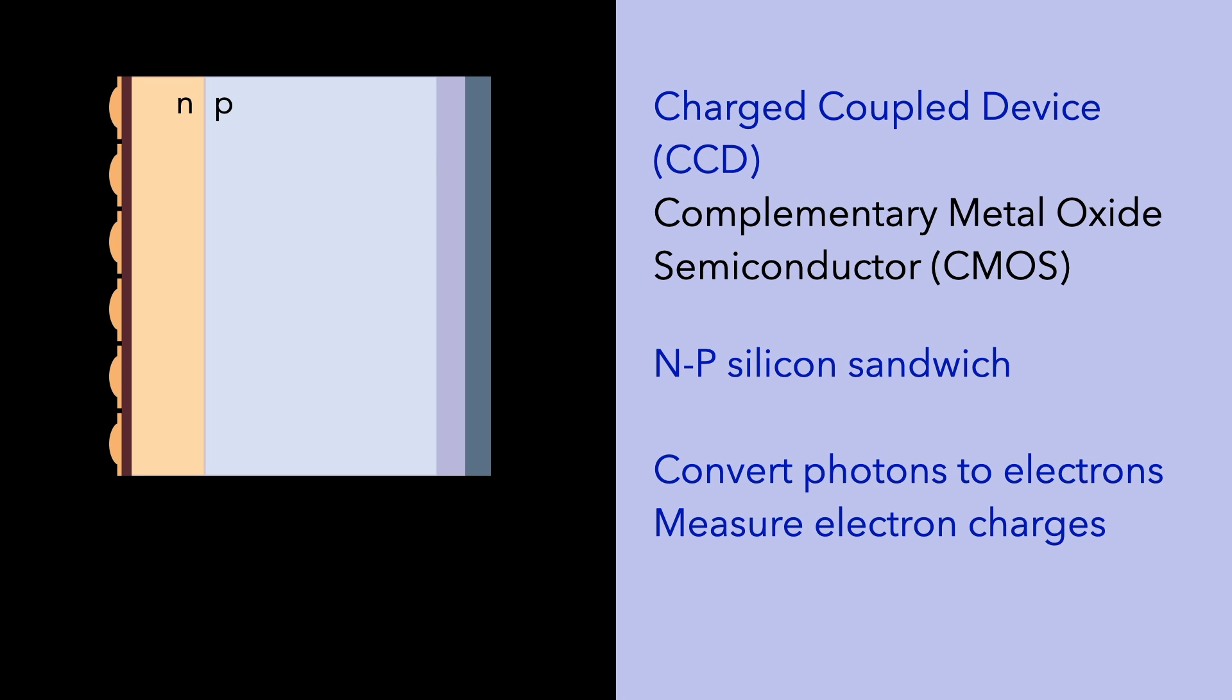At the heart of this technology is what is called a CCD or a CMOS chip. These are semiconductors, which are N-P silicon semiconductors, the N-P sandwiches. And as a result of this semiconductor design, you get a zone of slightly more positive charge at the N-P junction.